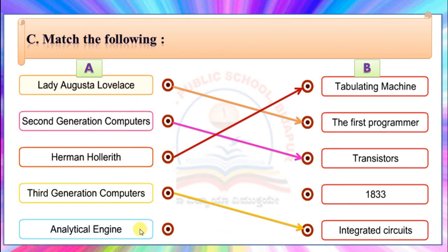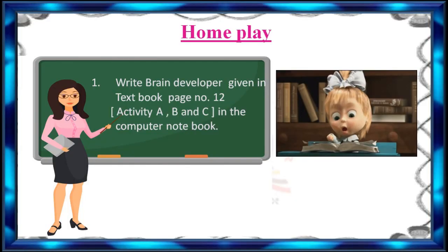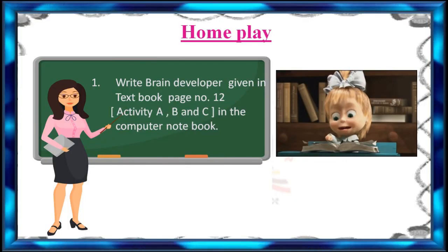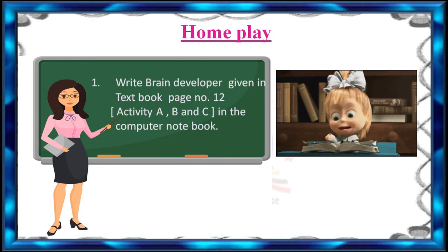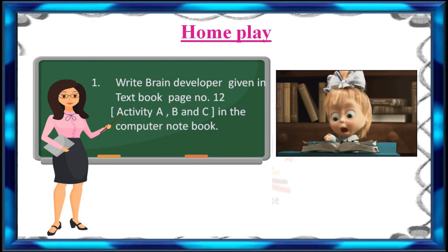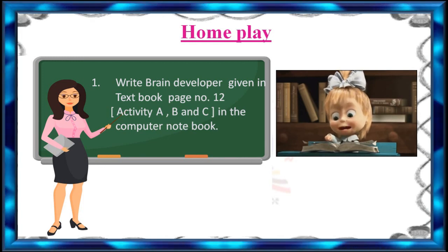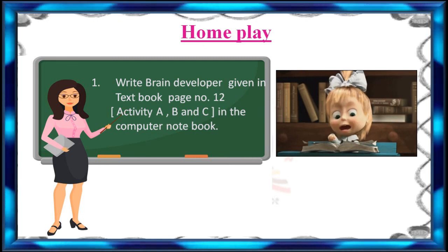Analytical Engine — the answer is 1833. Children, hope you understood this activity also. It is time to end our session. Homework: Write brain developer given in textbook page number 12, activity A, B and C in the computer notebook.